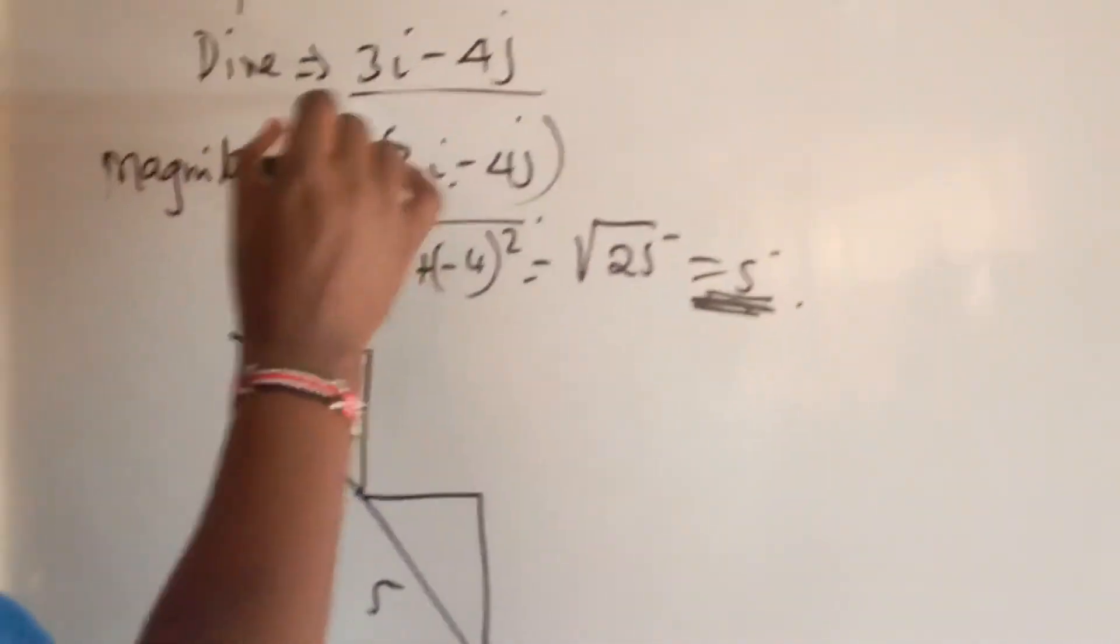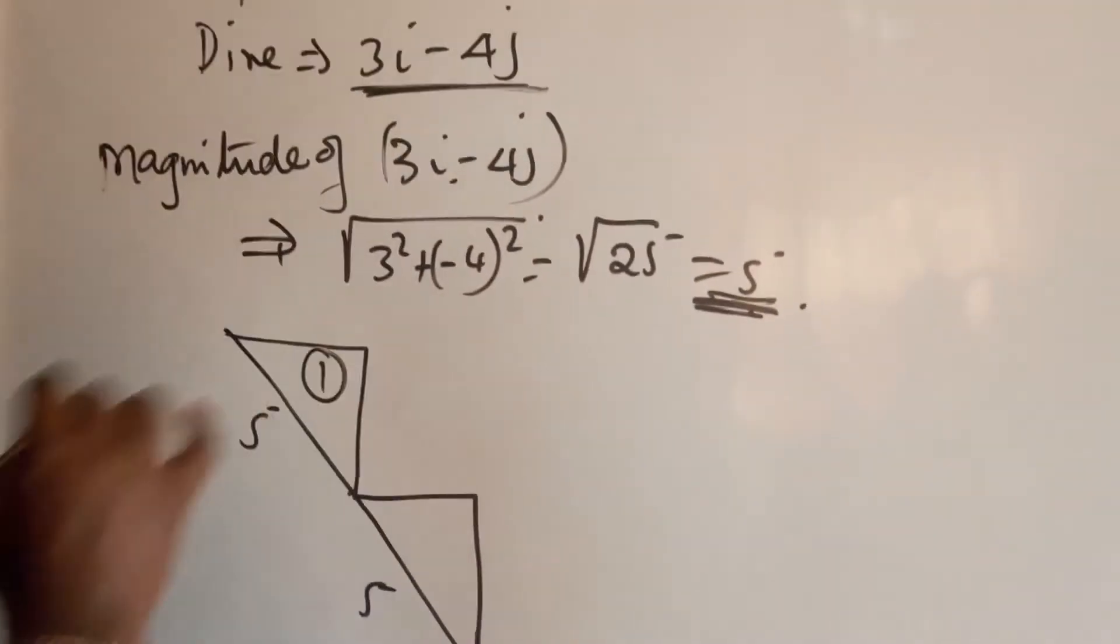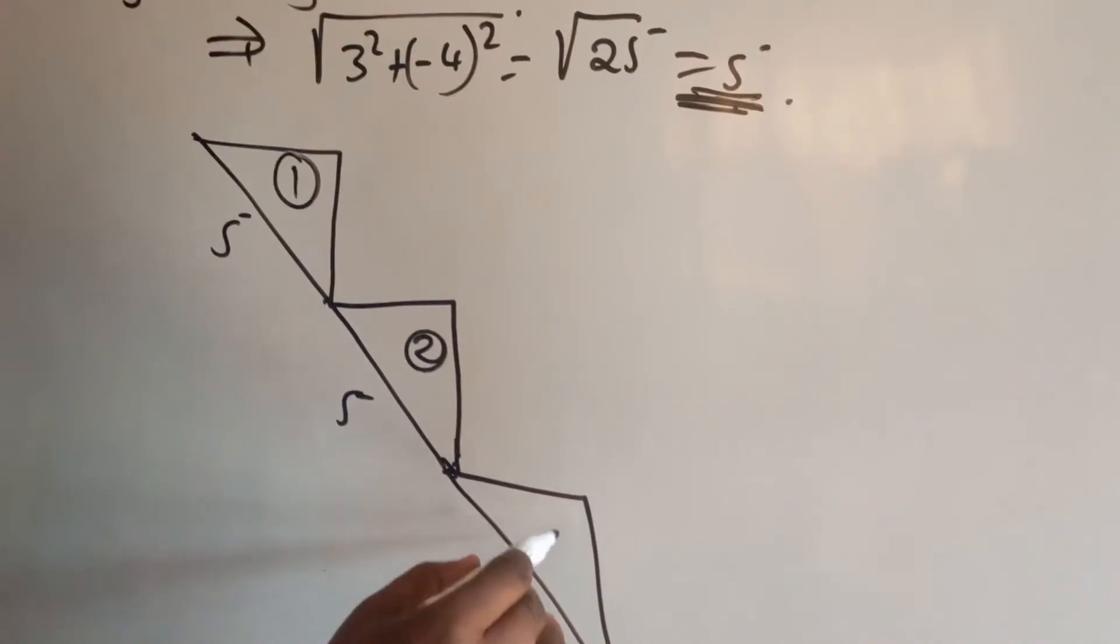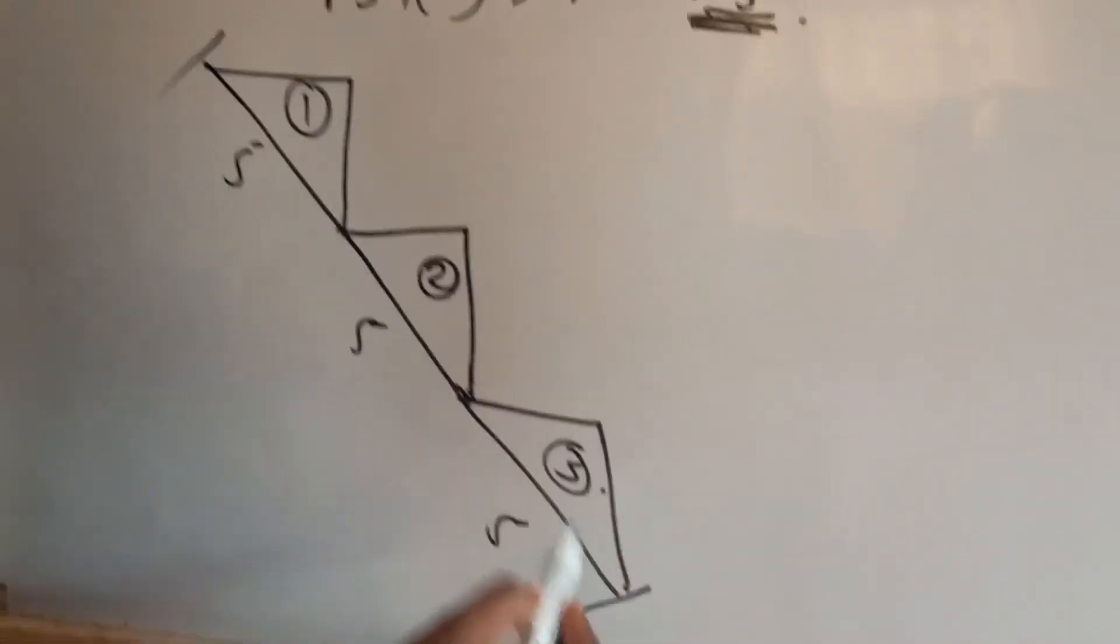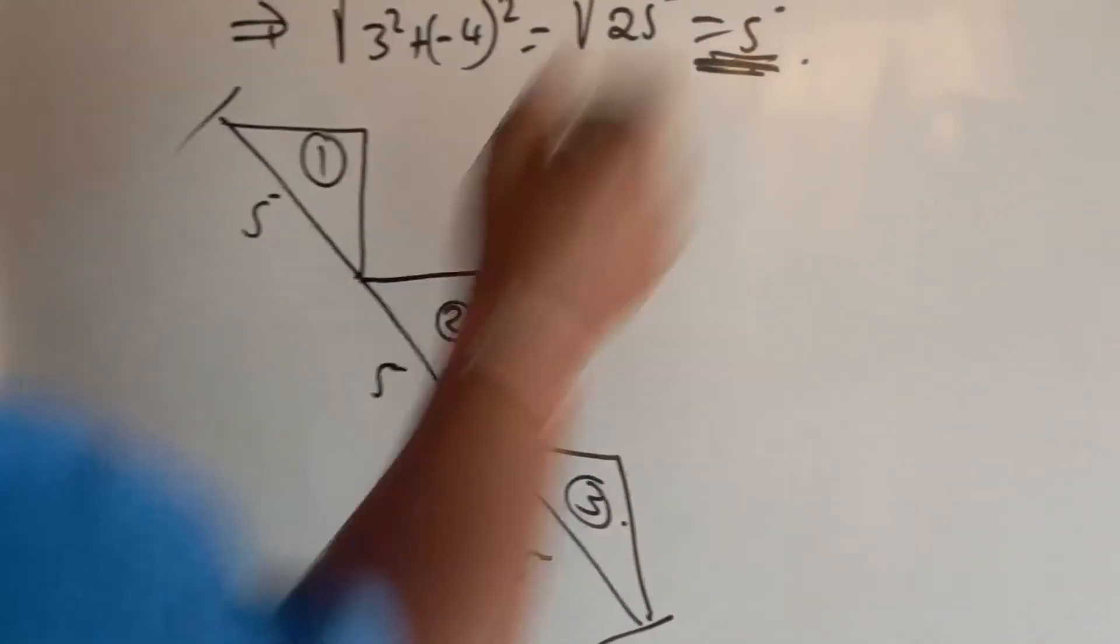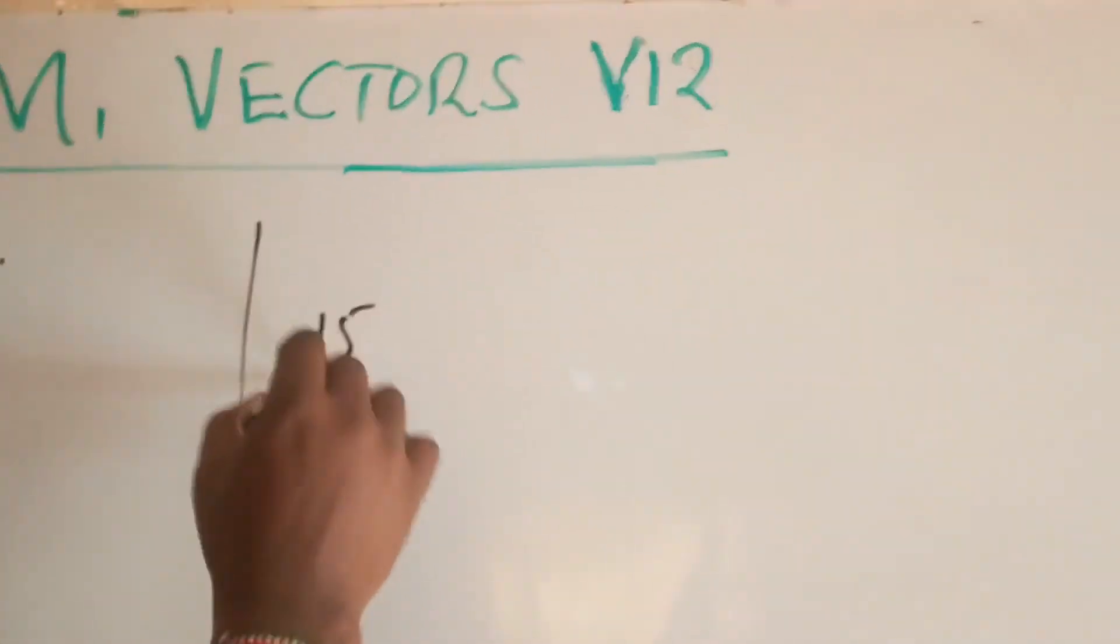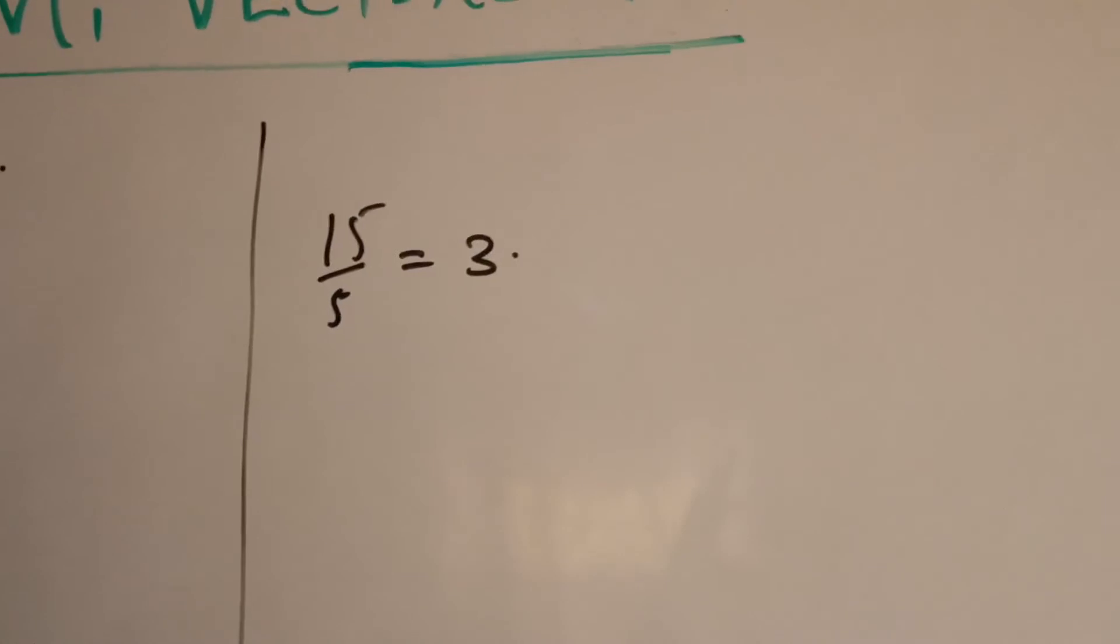And this is going to be realized after we multiply the vector by 3, because we have one set of displacement, another set of displacement, and the third set of displacement. That is what is going to give us 15 meters per second. Alternatively, we can highlight also 15 out of 5, we are going to get 3.